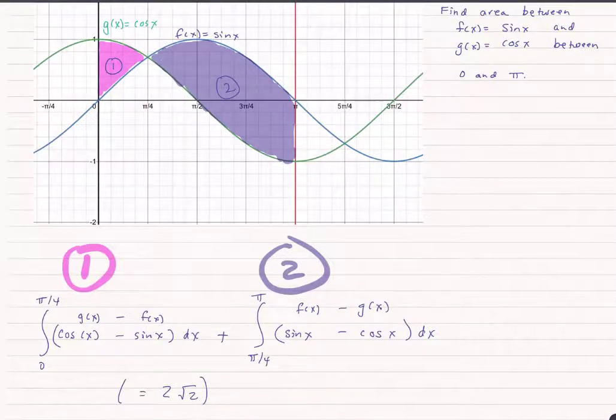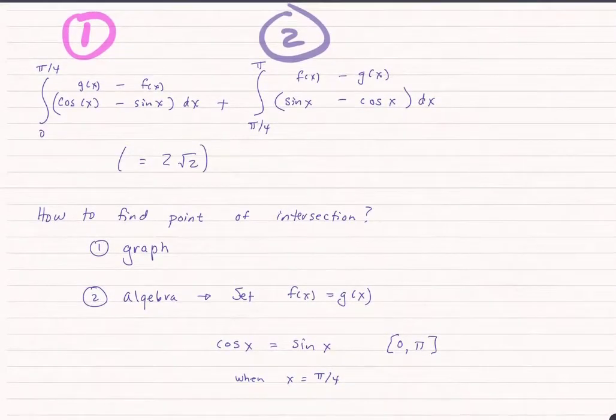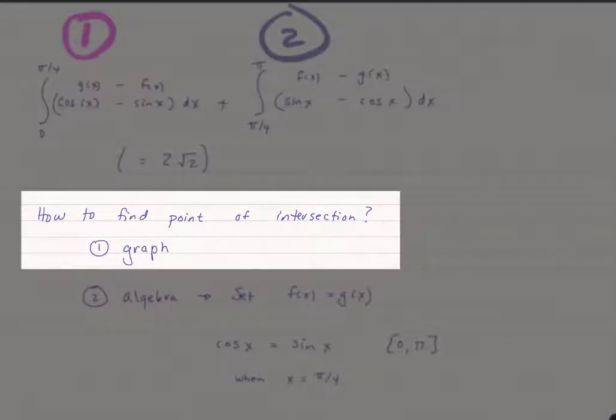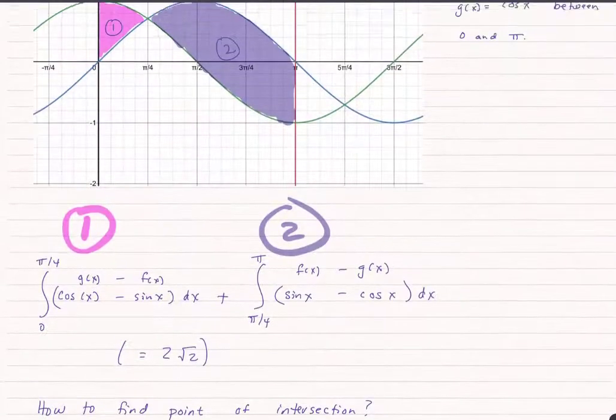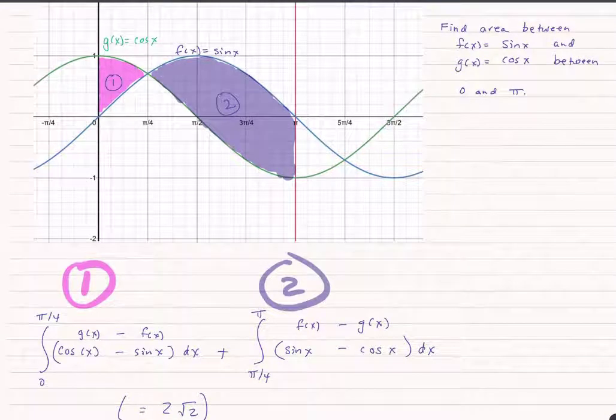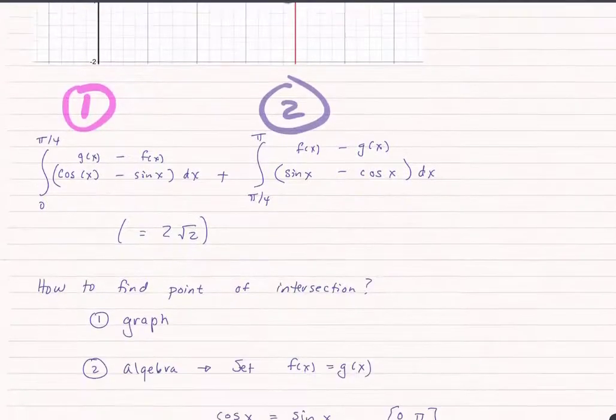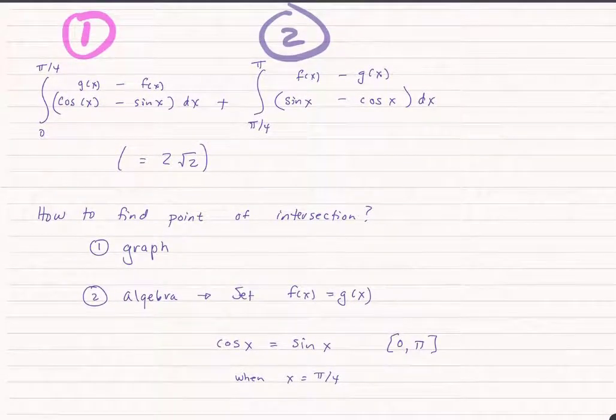You always know there's something else to worry about. The first thing we have to worry about is this point of intersection. How do we find it? I just told you it was pi over four. Well, it was pretty easy to read from the graph that that point of intersection was pi over four. But what if I asked you to do this algebraically instead of graphically?